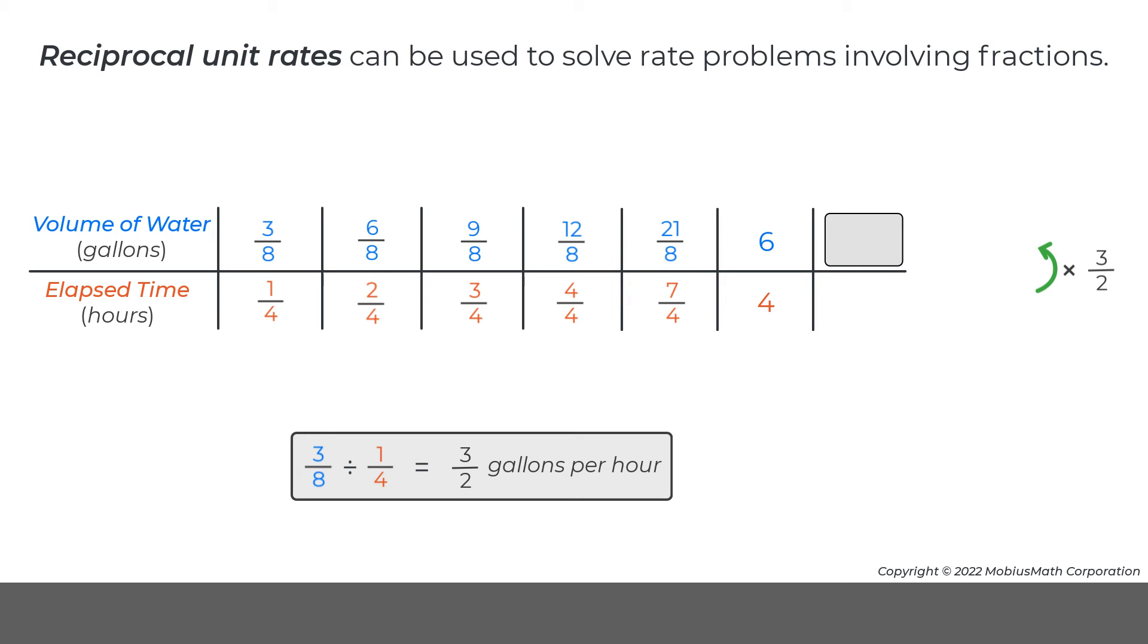Likewise, if the value for the volume of water that has leaked is known, that value can be listed in the top row and divided by 3 halves or multiplied by 2 thirds to find the time that it took for the faucet to leak that volume of water.